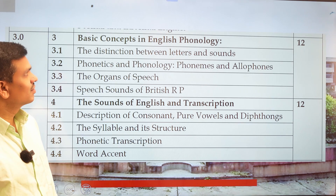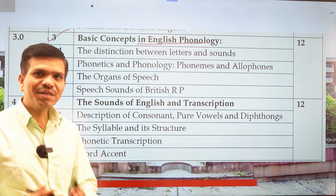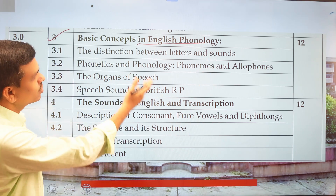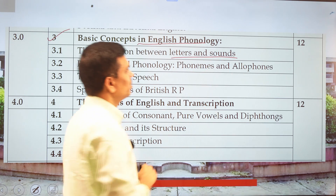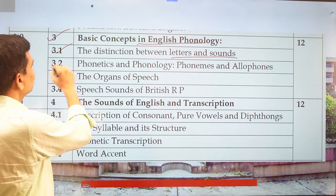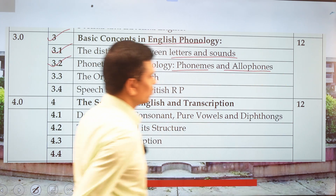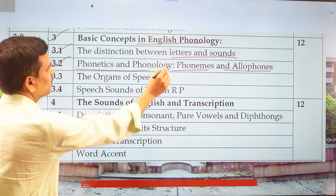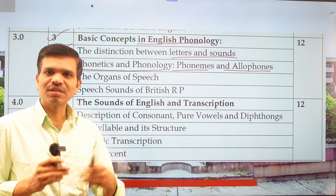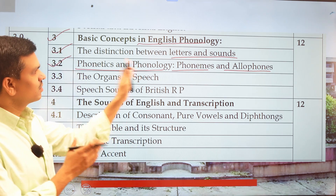Moving to Unit 3 — Basic Concepts in English Phonology — we go deeper into the study of language. We will consider the distinction between letters and sounds, which is a very important part. We will then cover phonetics and phonology: what are phonemes, what are allophones, how does the sound system form, and how many sounds are there in English.